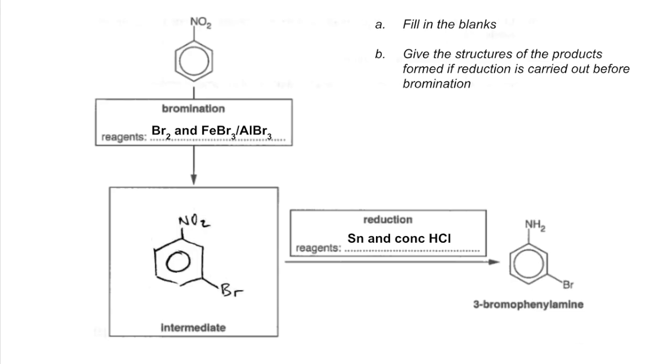If we think about part B now, if reduction was carried out first, that means we'd have an NH2 group here. NH2 is actually an electron donating group and it's going to put the bromine at position 2 or position 4. There's the answer for part B.